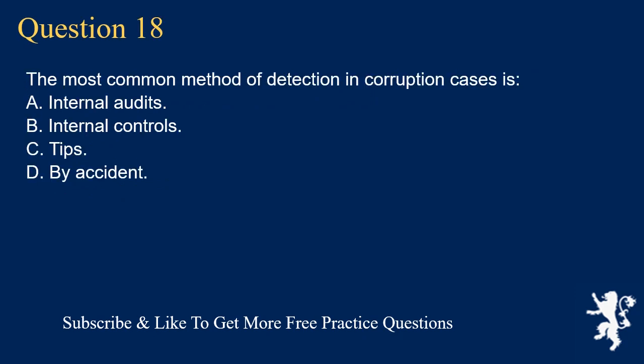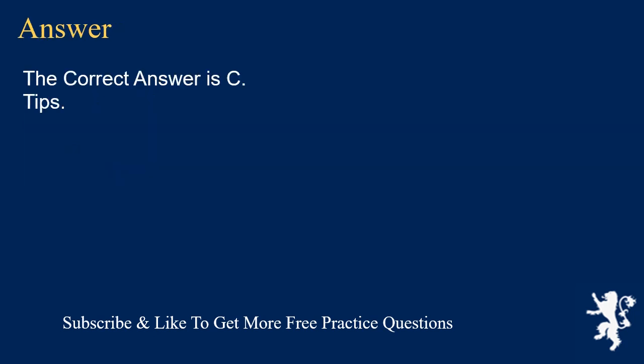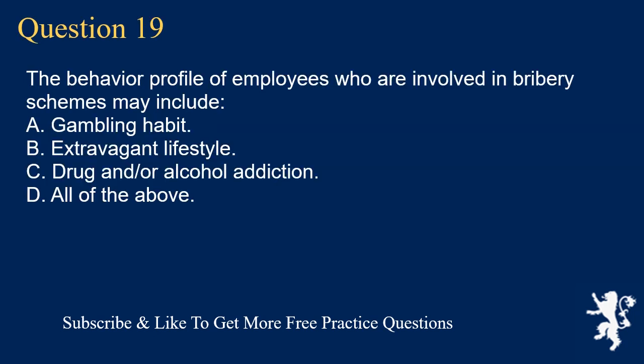Question 18: The most common method of detection in corruption cases is: A. Internal audits. B. Internal controls. C. Tips. D. By accident. The correct answer is C. Tips.